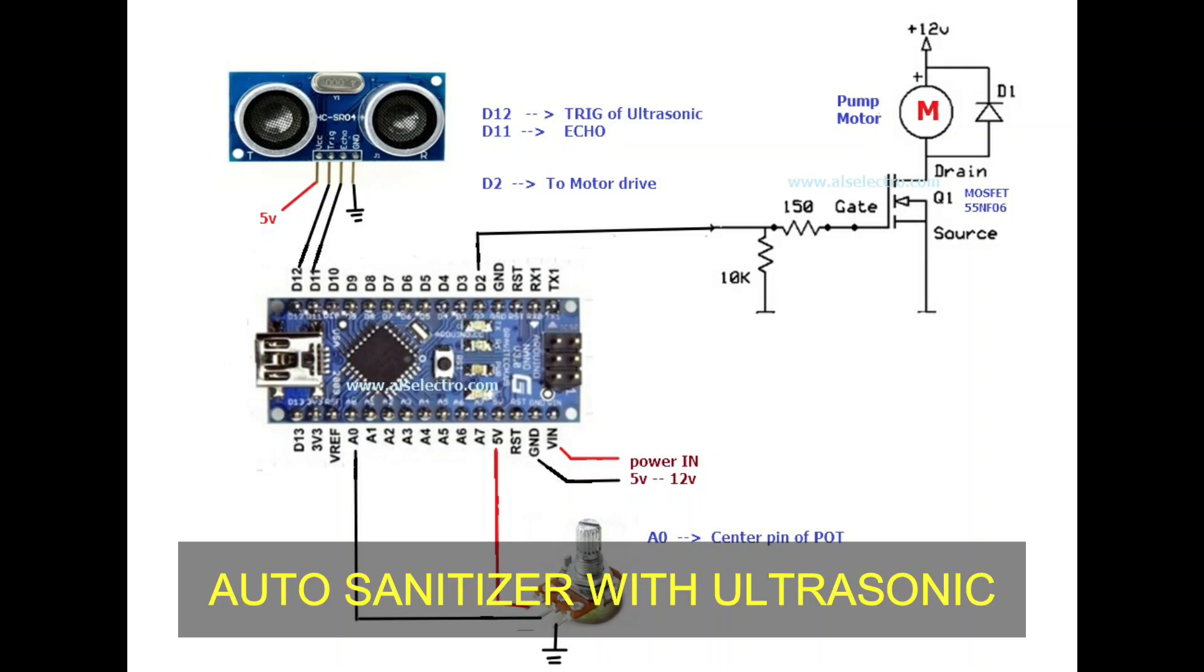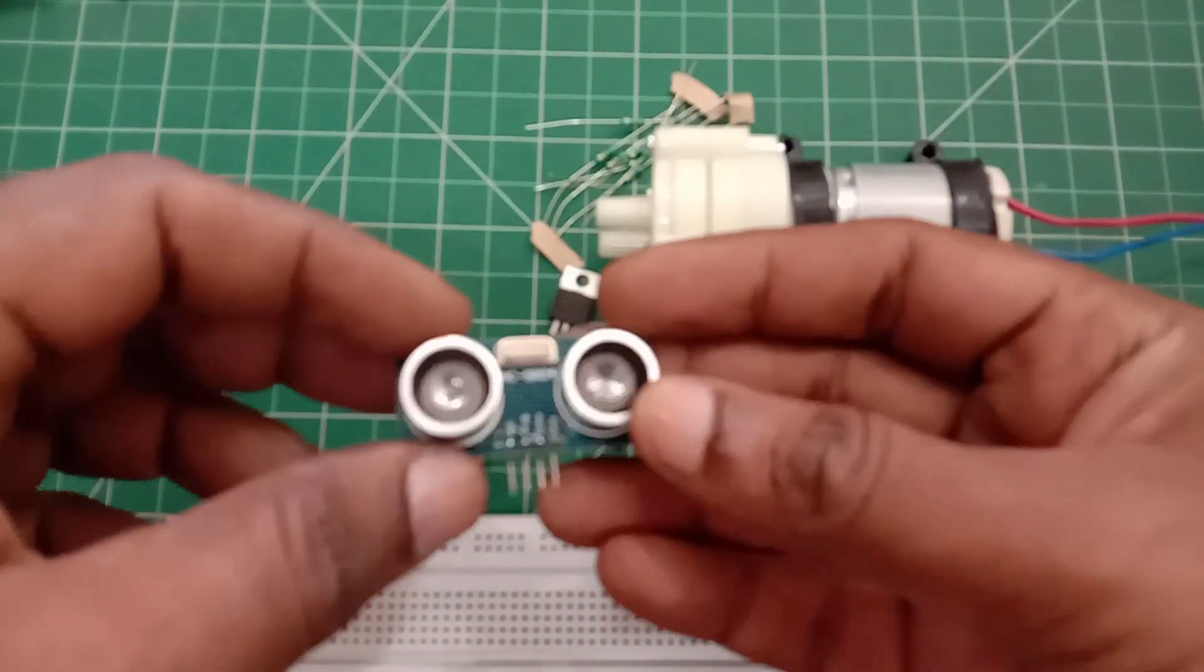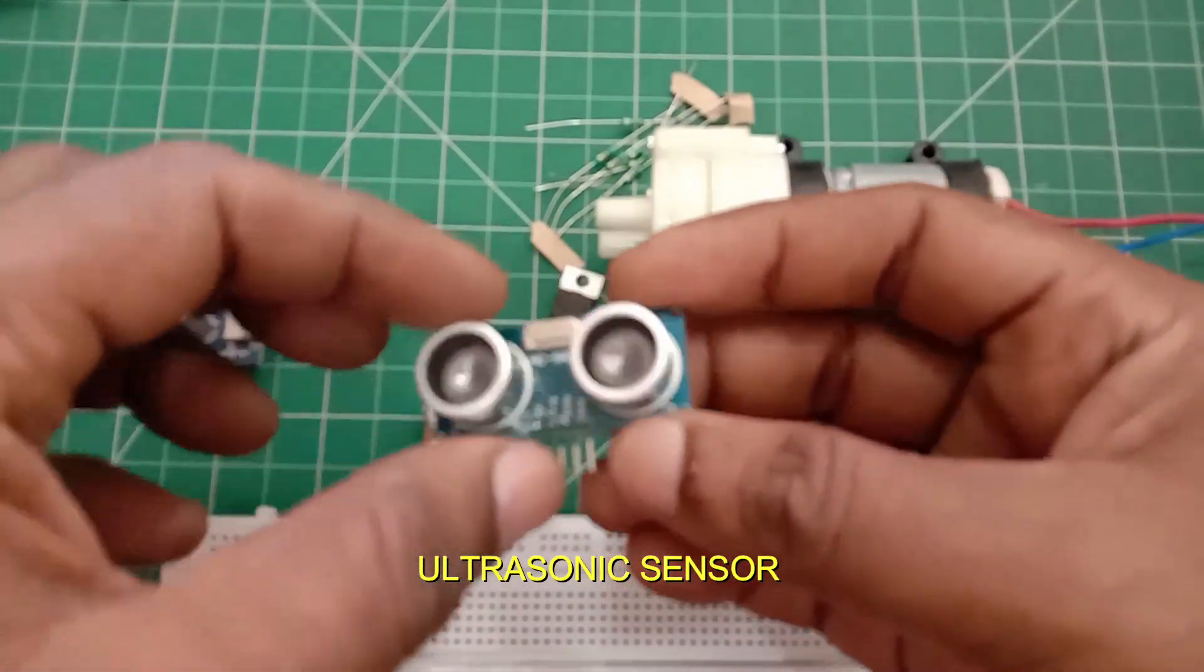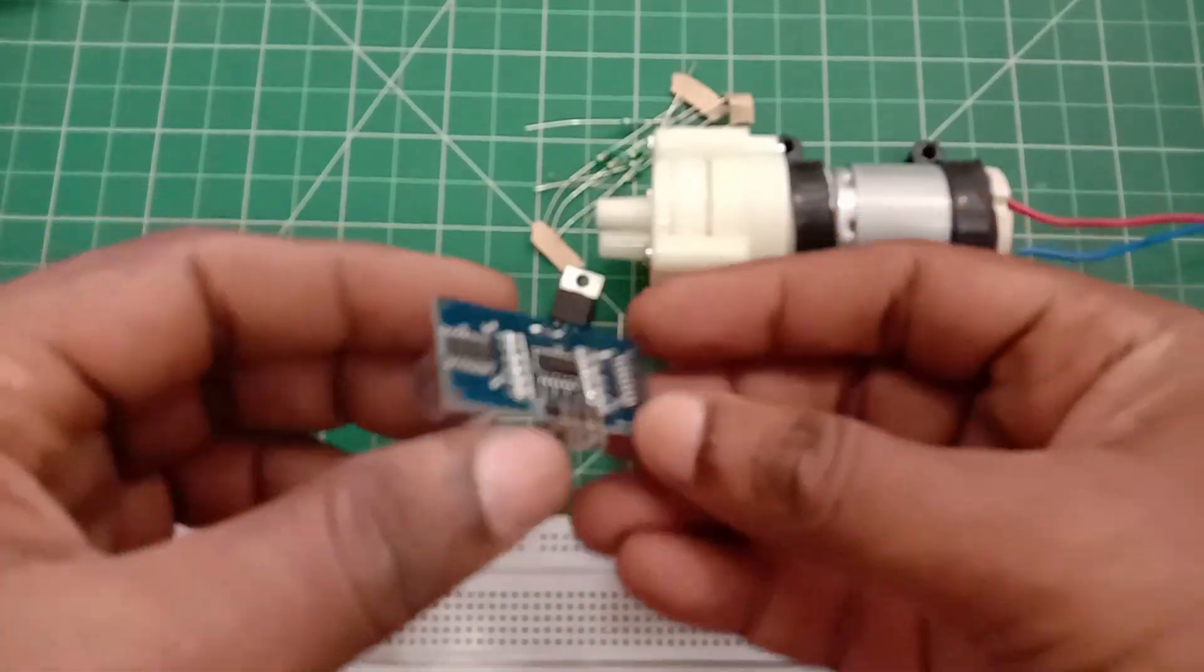Hello all, this video is on auto sanitizer dispensing kit using ultrasonic sensor. Generally ultrasonic sensor is used for distance measurement, here it is used to sense the hand.